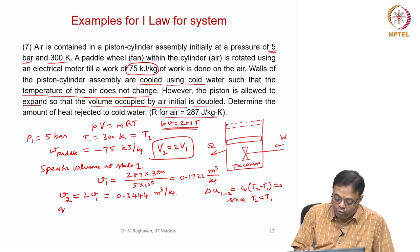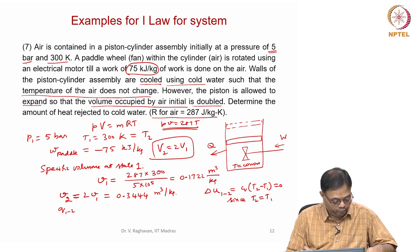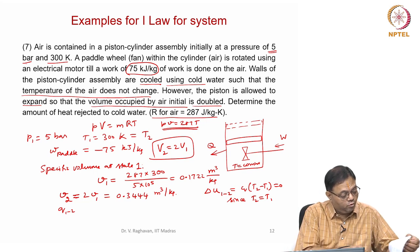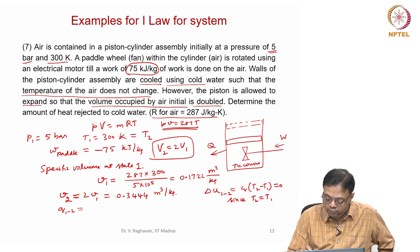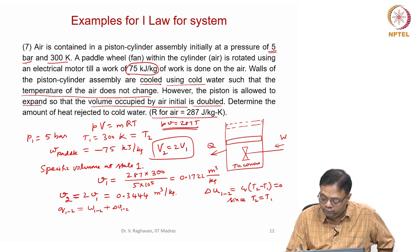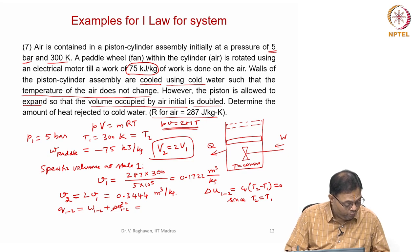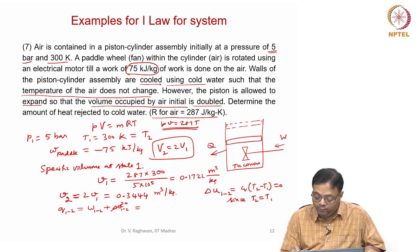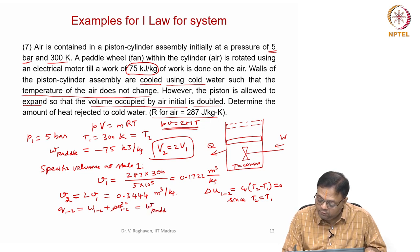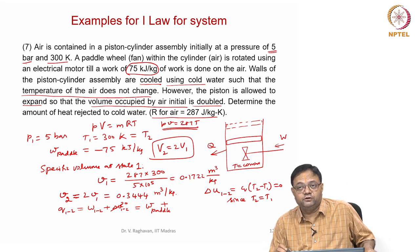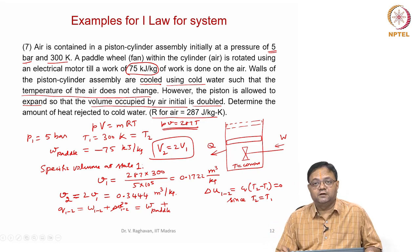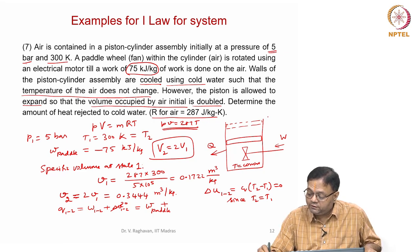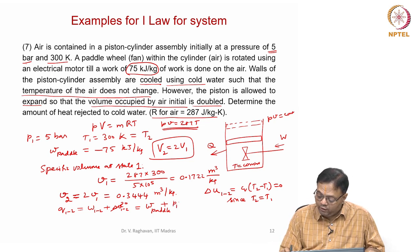So we can write q₁₂ = w₁₂ + delta u₁₂. Since delta u = 0, q₁₂ = w₁₂, where w₁₂ includes w_paddle plus the expansion work. This expansion occurs at constant temperature, so it obeys pv = constant, giving w_expansion = p1v1 × ln(v2/v1).